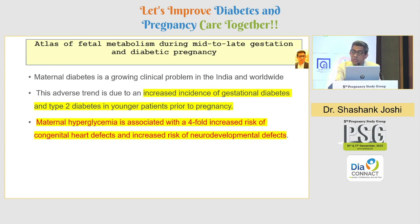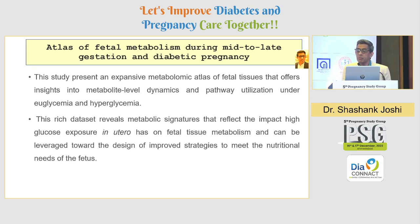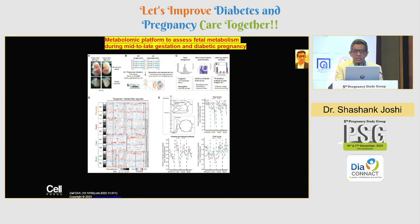Maternal diabetes is a growing clinical problem in India and worldwide. We clearly see an adverse trend of increased incidence of gestational diabetes and type 2 diabetes in younger patients prior to pregnancy. Maternal hyperglycemia carries a 4-fold increased risk of congenital heart disease and neurodevelopmental defects. This study provides an extensive metabolic atlas of fetal tissues and gives us metabolic-level dynamics and pathways of utilization from both euglycemic and hyperglycemic models, revealing metabolic signatures that study the impact of high glucose exposure in utero on fetal tissue metabolism.